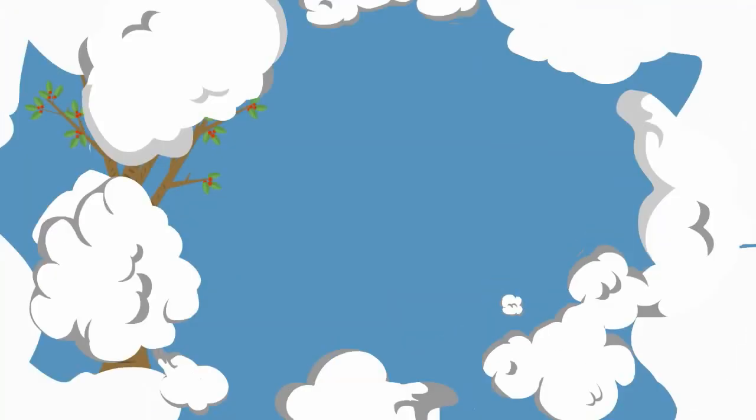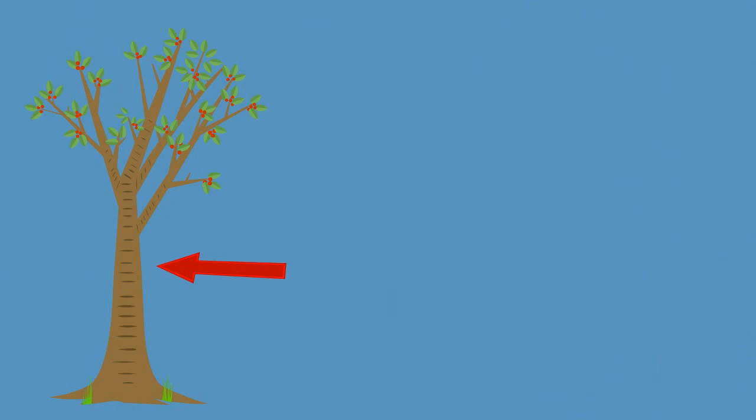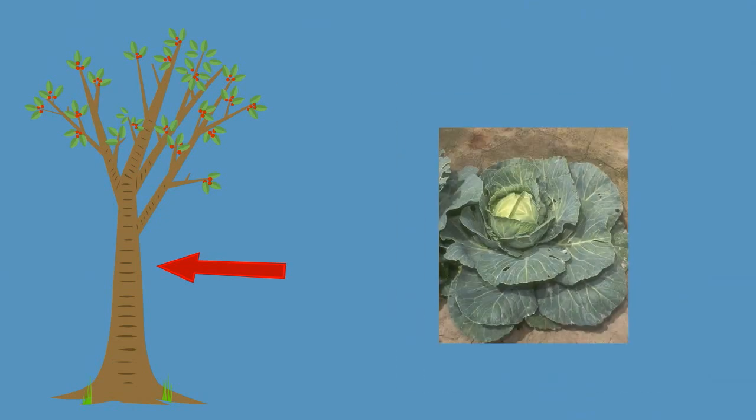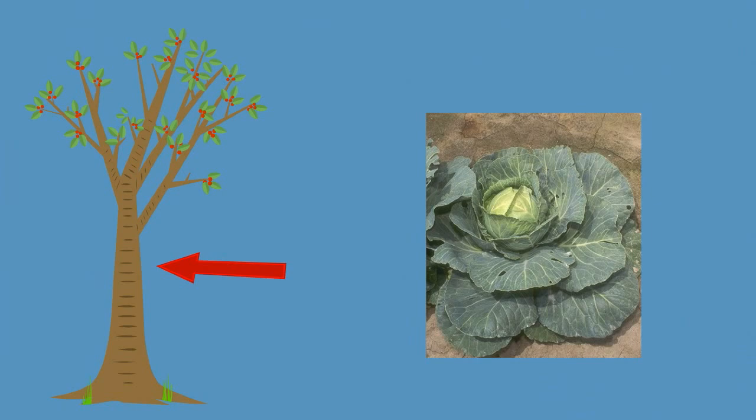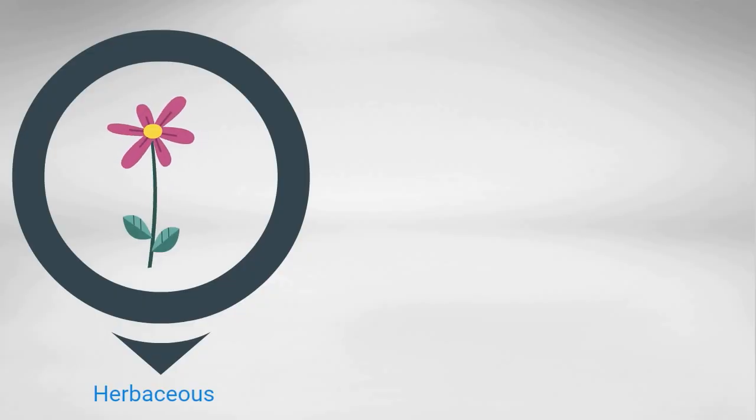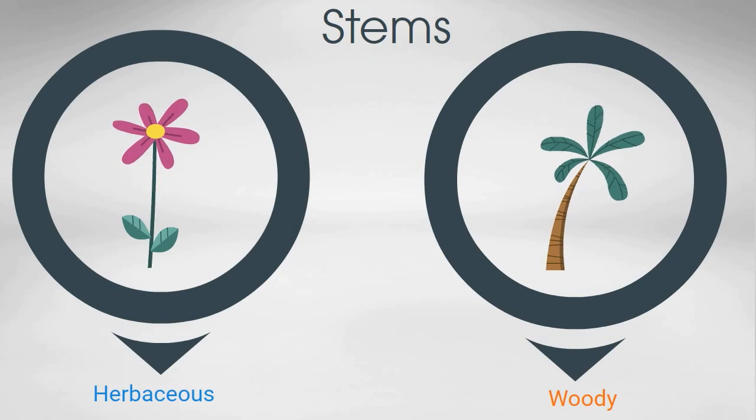Stems come in varied shapes and sizes. Some stems, like those of trees, are very prominent. Other stems, like those of cabbage, are short and hidden. Stems can be either herbaceous or woody. Herbaceous stems are soft, like the stems of many flowers. Woody stems are very firm and rigid, like those of trees.